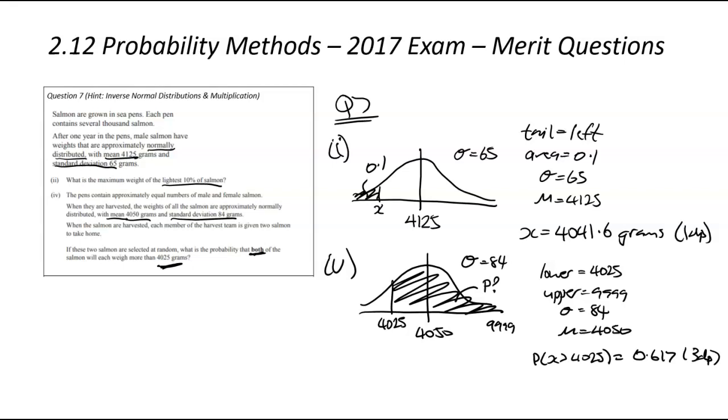Once you've got that, that there would actually get you an achieved mark, but it is a merit question. We've now been asked about the probability that both are more than that. So working over here, probability that both weigh more than that number, 4,025. And that there would be the probability of them being more than that number times itself. So we're going to square that. So there's 0.167 squared. And when you square that, you're going to get 0.3807 and that there had a 4DP rounding.